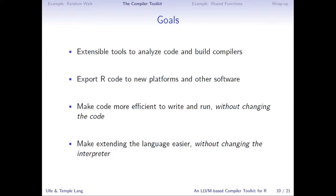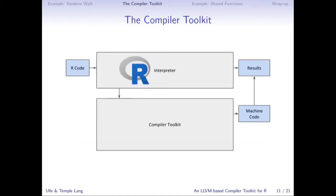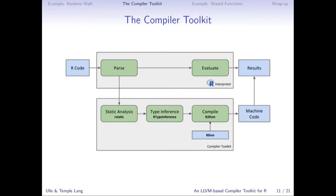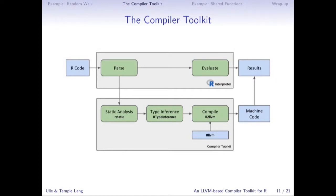Finally, we'd like to make it easier to extend the language. It's possible to extend R now — it has great metaprogramming tools — but it's often not as efficient as you'd like. It would be more efficient if we could compile to native code. This doesn't completely replace the interpreter; it sits alongside it. Normally the interpreter takes R code and gives you results. Under the hood it parses the code and evaluates it. We use the R parser — there's no reason to replace it — then run extensible static analysis, type inference, and finally compile to machine code.